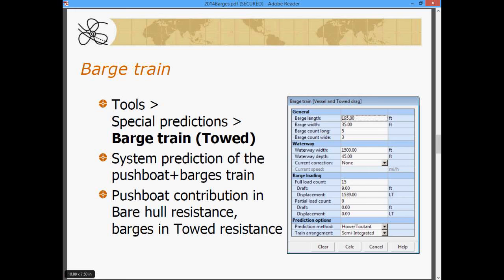We can define the waterway characteristics, the width of the waterway, the river system, and the depth. We can also look at currents into or with and a current speed.